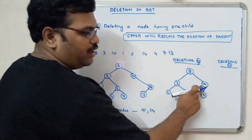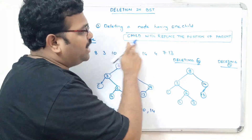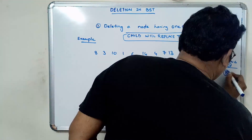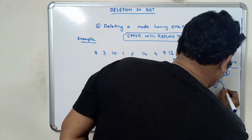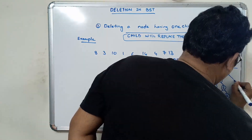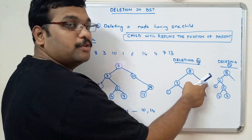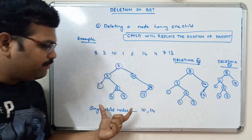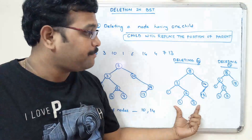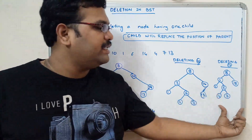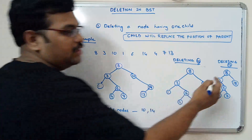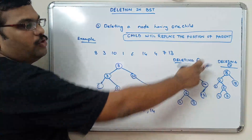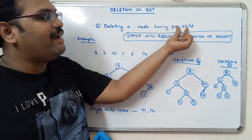Deleting 14: 14 is a node with only one child, which is 13. From the rule, the child replaces the position of the parent, so 13 replaces the position of 14. After deleting 14, the tree is: 8, 3, 1, 6, 4, 7, and 13 as the right child of 8. The BST property is not violated even after deleting 14. This is how we delete a node which has only one child.